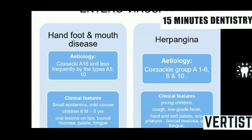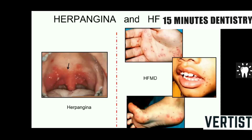Another group is the Coxsackie group of viruses, which can produce hand, foot and mouth disease and herpangina. Herpangina lesions characteristically appear as vesicular lesions in the posterior part of the palate or oropharynx, which may extend anteriorly into the oral cavity. In hand, foot and mouth disease, similar lesions are seen on the hands, mouth and feet, more often in children.